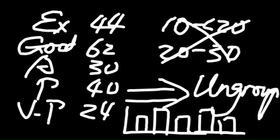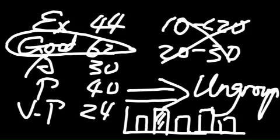For qualitative data, we can find the mode. The category with the most occurrences is our mode. In this case, 'good' has the most numbers, so 'good' will be our mode.